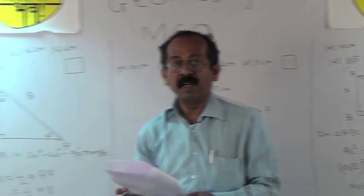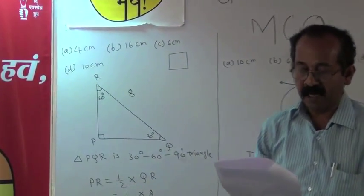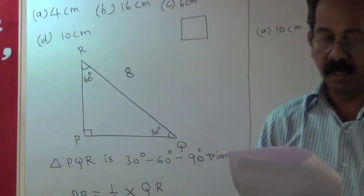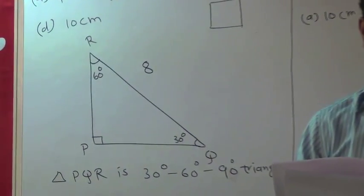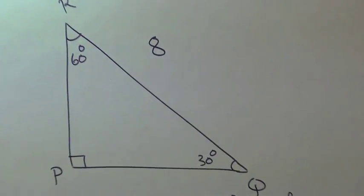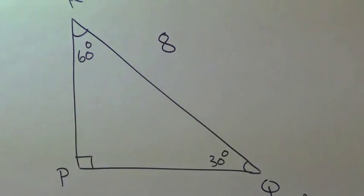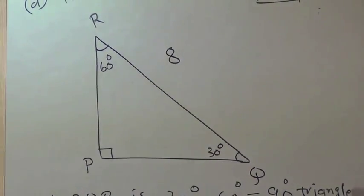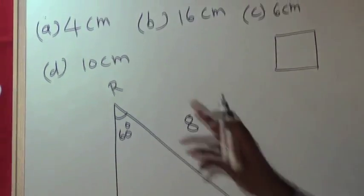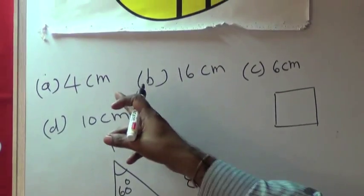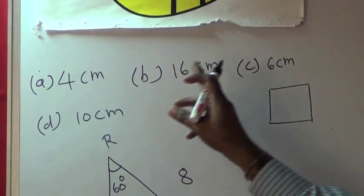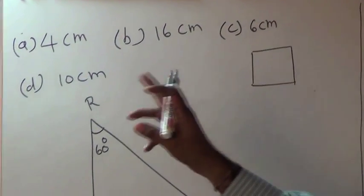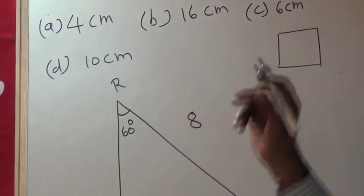Example 5: In triangle PQR, angle P is 90°, angle Q is 30°, and angle R is 60°. If QR is equal to 8 cm, what is the length of PR? The alternatives are: A) 4 cm, B) 16 cm, C) 6 cm, D) 10 cm.